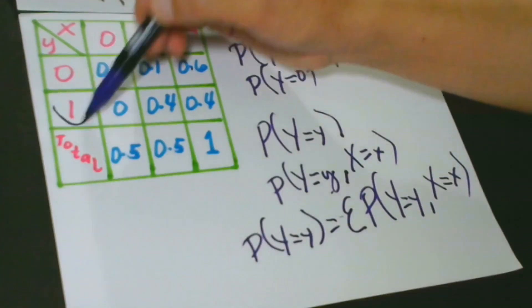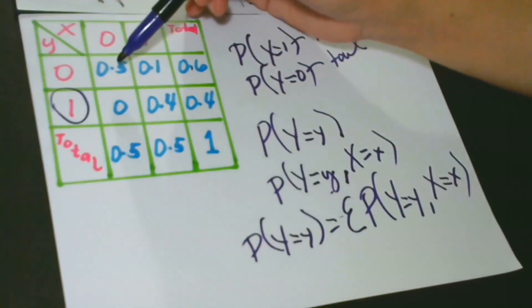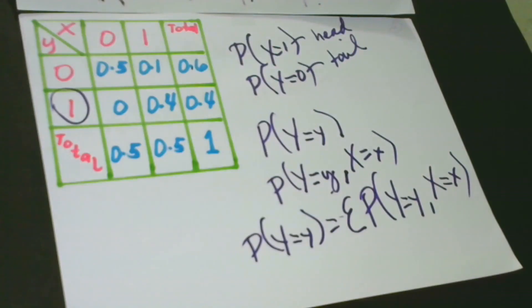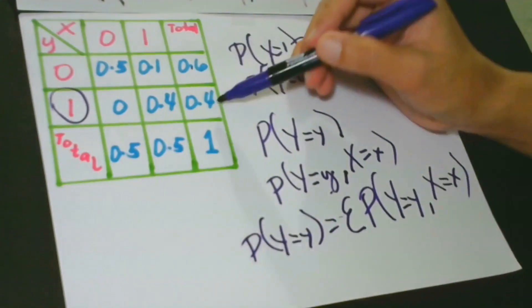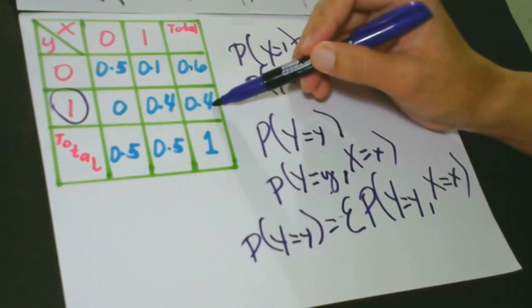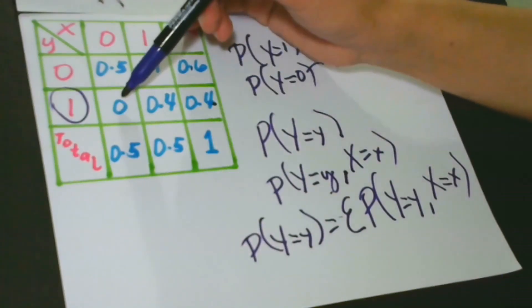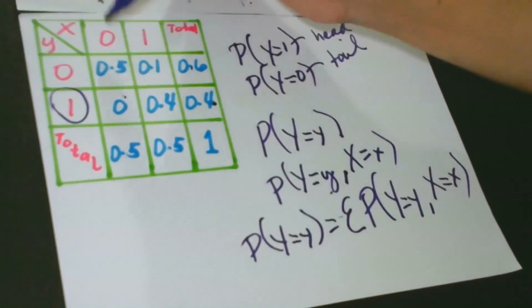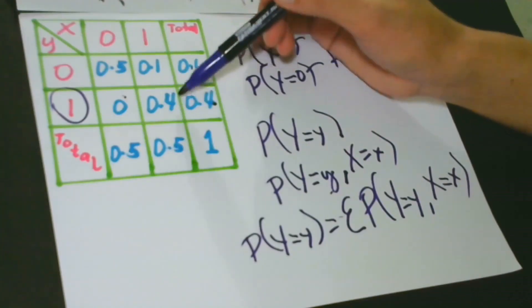When Y is 1, the marginal distribution is 0.4. Remember, this is the result of adding 0 if X is 0 and 0.4 if X is 1.